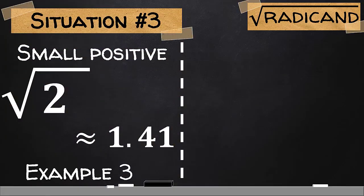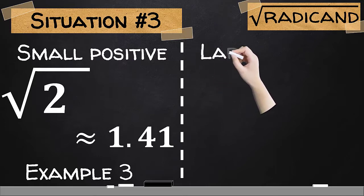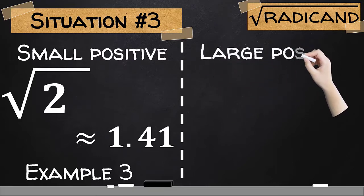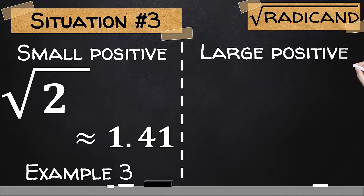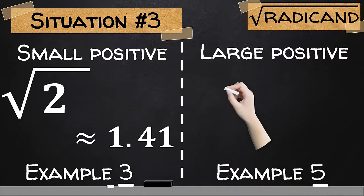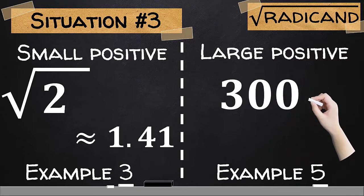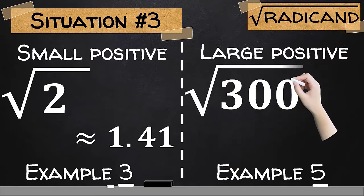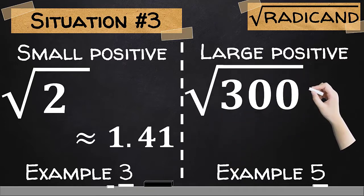Now, for situation number 3, let us stick with example number 3 but add another example where the radicand is now a large positive number. This would be example number 5. And let us consider the radicand to be 300.